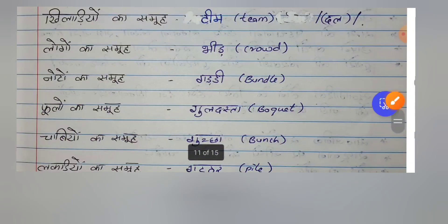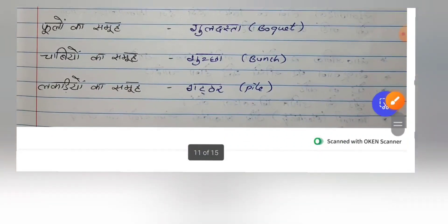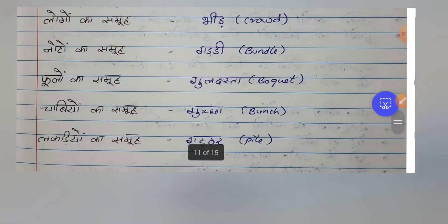Here are the answers: Killadiyon ka samu — Team (sometimes dal can also be used here). Logon ka samu — Bhid. Nooton ka samu — Gaddi. Phoolon ka samu — Guldasta. Chabiyon ka samu — Guccha. Lakdiyon ka samu — Guthar. So there is no shortcut — you have to learn this vocabulary.